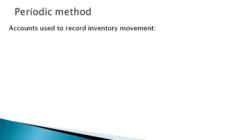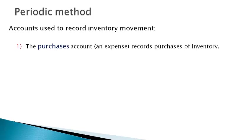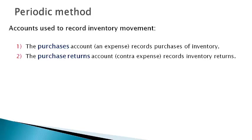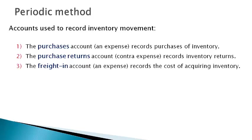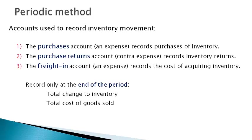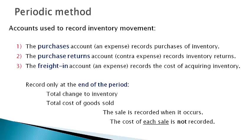Accounting for inventory movement during the period is recorded without using the inventory account. The purchases account, an expense, is used to record the purchase of inventory. The purchase returns account, a contra expense, is used for inventory returns. The freight in account, an expense account, is used for the cost of acquiring inventory. The total amount of the change in inventory and cost of goods sold is recorded only at the end of the period. The sale is recorded as it occurs; however, the cost of inventory for each sale is not recorded because it is not known at the time of the sale.